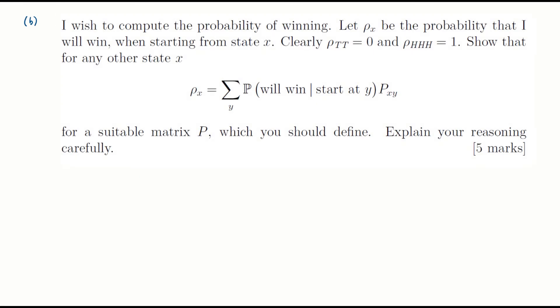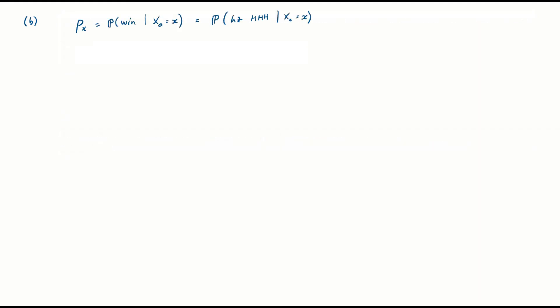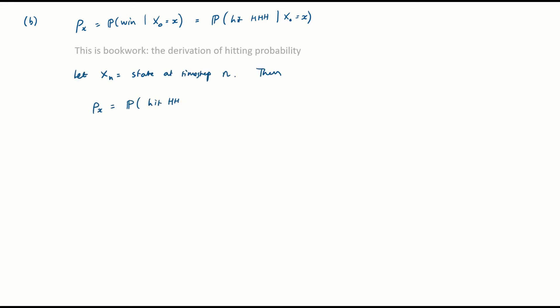Part B: I wish to compute the probability of winning. Let rho subscript x be the probability that I will win starting from state x. This is just a question about hitting probabilities — the probability of winning is the probability of hitting state HHH. So it's all entirely book work. This is the sort of derivation which you should memorize from lecture notes and be able to reproduce without thinking.